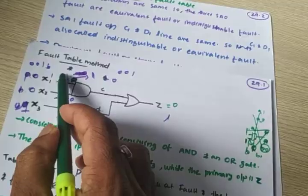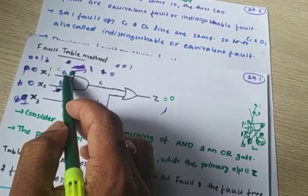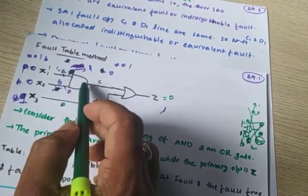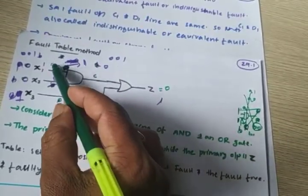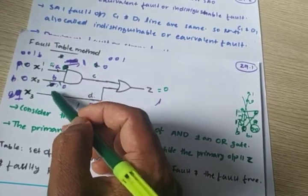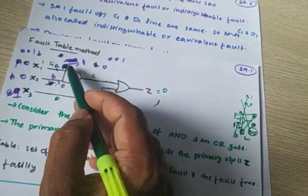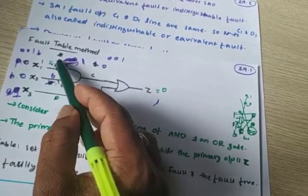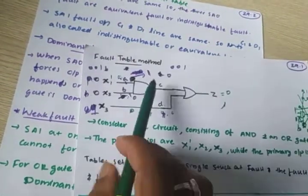Consider this AND gate. If a stuck-at-0 is at input A, the output is 0. So this is the dominant fault. If A has a stuck-at-0 fault, this is the dominant fault.